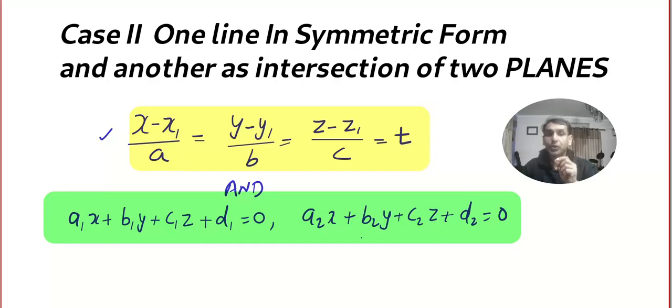I hope you remember when two planes are given which are non-parallel, of course, then that will create a line. You can imagine the two planes. Can you see two planes here and are you able to see the intersection that is a line?